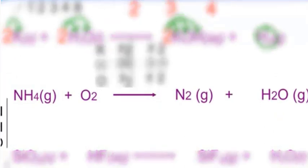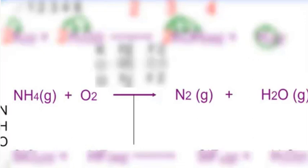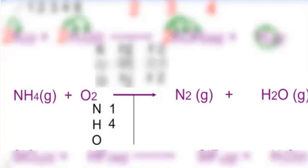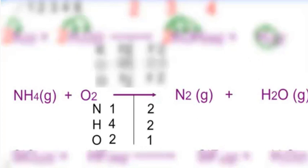The next one: NH4 plus O2 yields N2 plus H2O. Go ahead and draw your perpendicular bar at the arrow, and write all the elements that are given — N, H, and O — on both sides of the equation. Start by writing the total numbers on your reactant side: nitrogen is 1, hydrogens are 4, and O's are 2. On the product side, we have 2 N's, 2 H's, and 1 O. So we have 1 N to 2 N's, 4 H's to 2 H's, and 2 O's to 1 O.